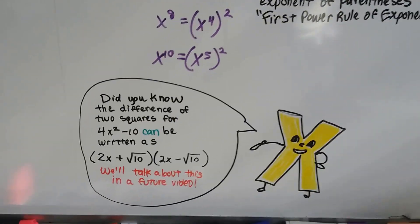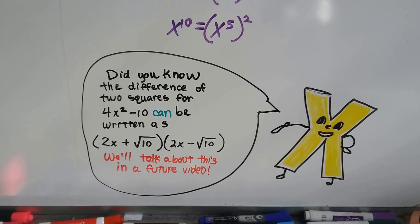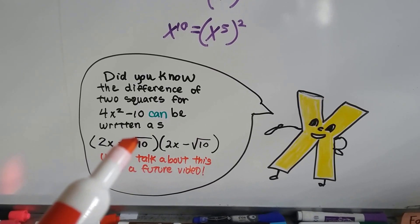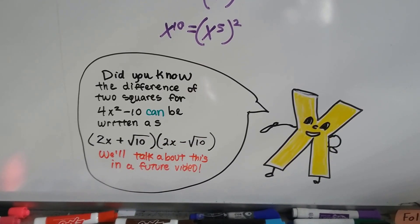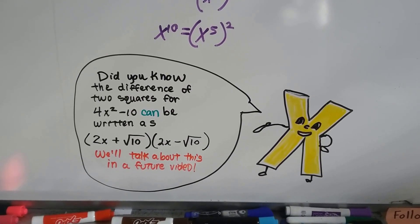And did you know the difference of two squares for 4x squared minus 10 can be written as 2x plus 10 inside of a radical symbol and 2x minus 10 inside of a radical symbol? But that's way in the future. We'll talk about that way into algebra.